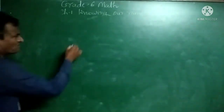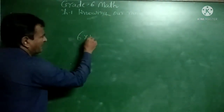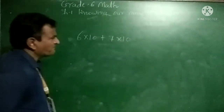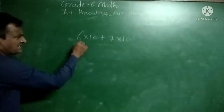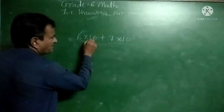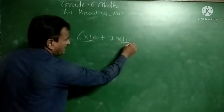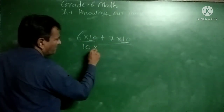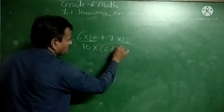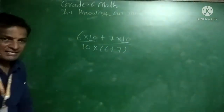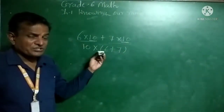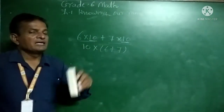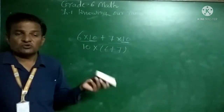Suppose I want to write down 6×10 plus 7×10. If you want to simplify easily, 10 is common on both sides. Then we take 10 outside and multiply 6 plus 7. This is also known as the distributive property of multiplication over addition, which we are also learning in chapter 2.